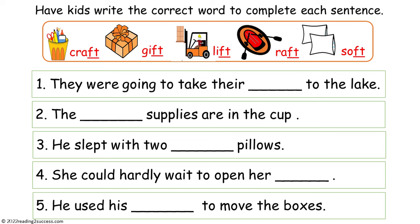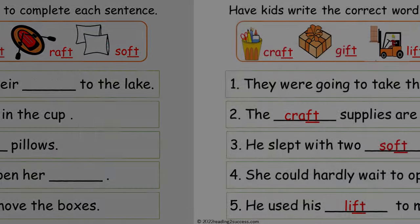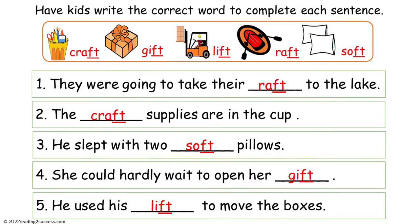Now have kids write the correct word to complete each sentence. Their choices are craft, gift, lift, raft, or soft. This is the completed example.